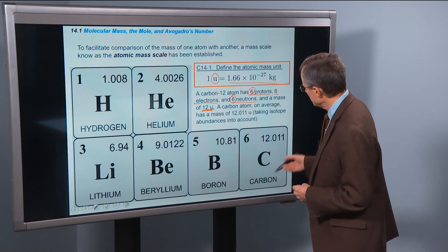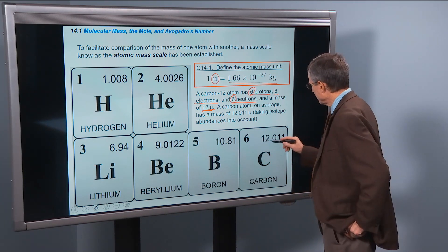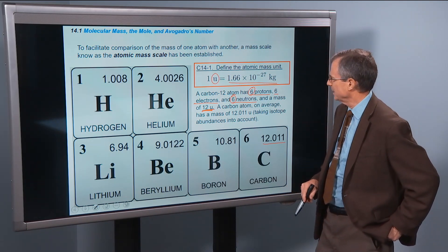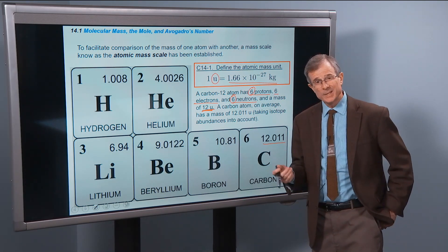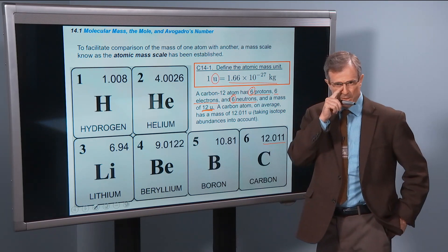So when you see carbon in a periodic table, you don't see 12. For the atomic mass, you see 12.011. Why is that? The reason is that carbon comes in different isotopes.